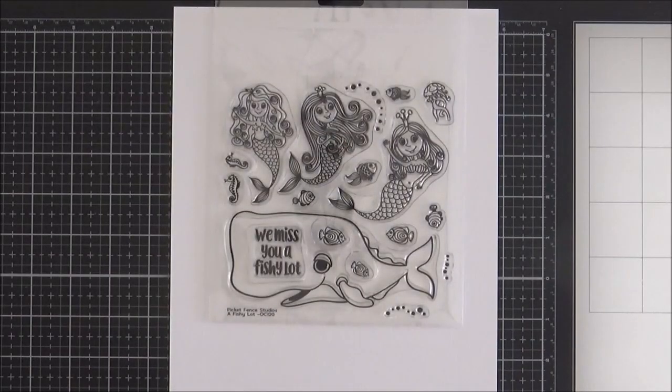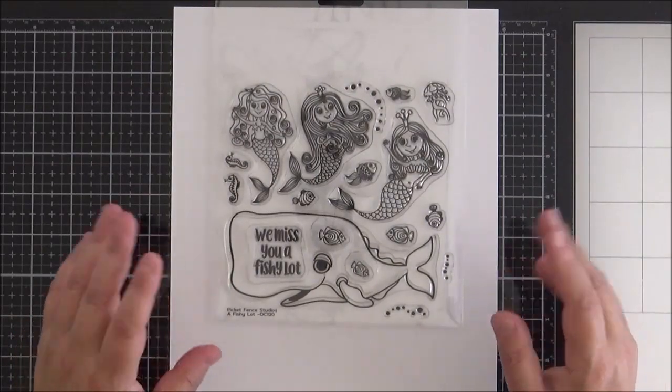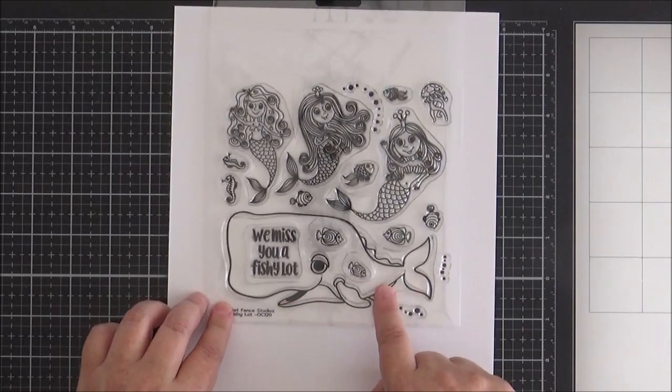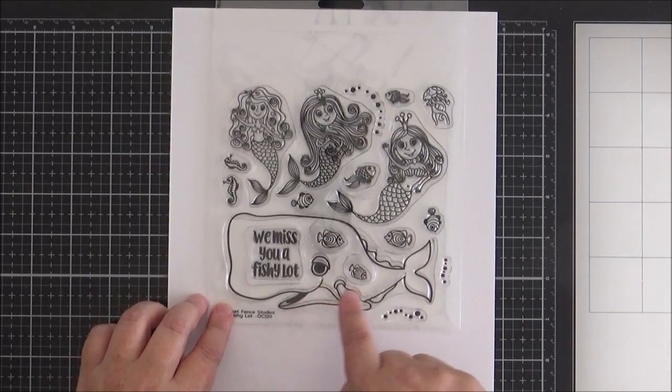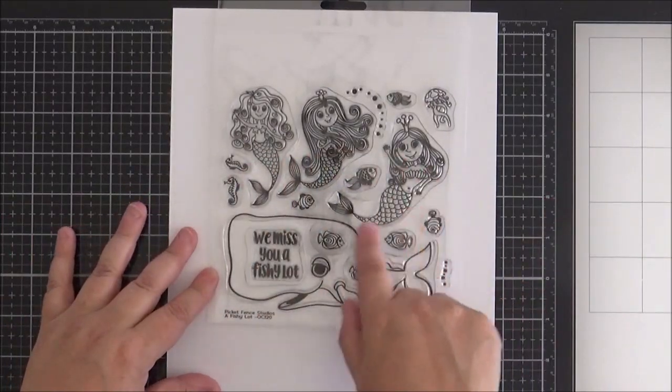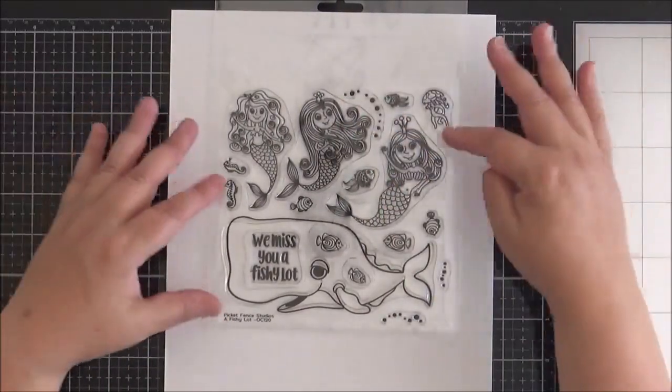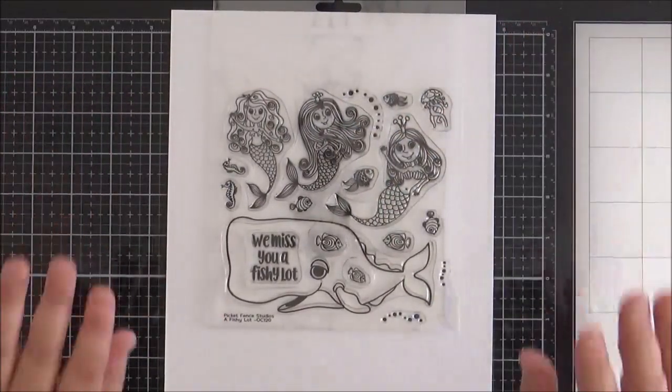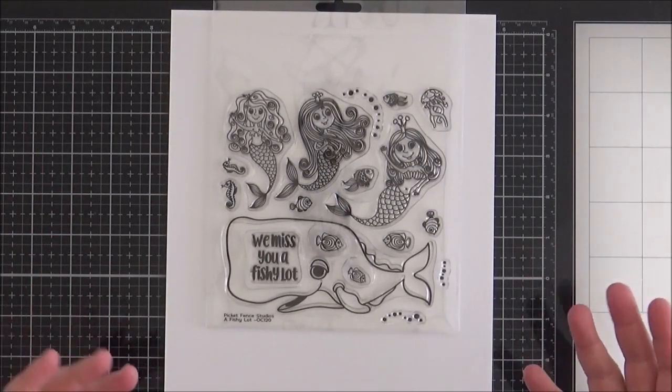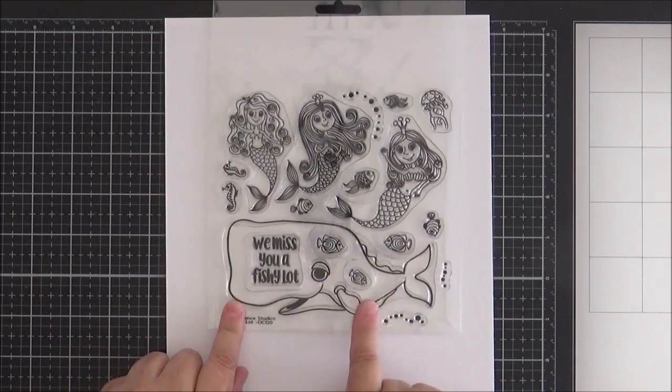The next set that I want to show you is called A Fishy Lot. I absolutely love this set. When I saw this set, this whale, I mean, come on. It's so cute with a little eye, and I just love the style of this whale. And of course, you've got some mermaids there. You've got some fish, some little seahorses. You've got bubbles there, a jellyfish. So there's lots of ways that you can use this set. You can combine it with existing sets as well that came out a few months ago. But I just love this whale.